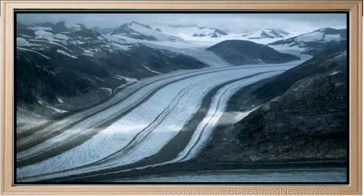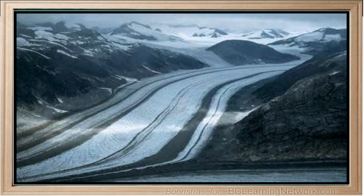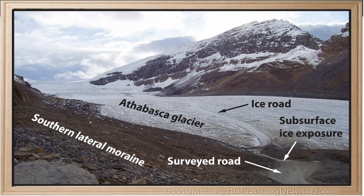Glaciers carry a large amount of rock debris. A moraine is any glacially formed accumulation of unconsolidated glacial debris — that is, soil and rock. Moraines are long, sharply crested ridges made up of a mixture of sand, gravel, and rocks that have been deposited by a melting glacier. Moraines are usually classified according to where they originate within the glacier.